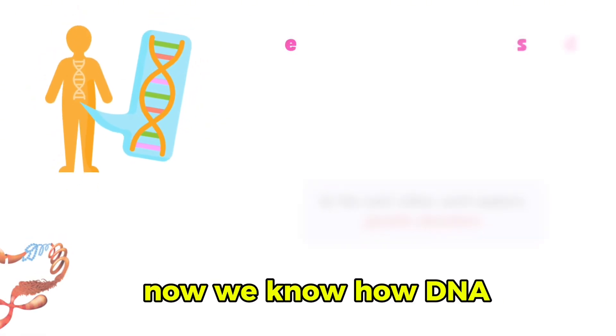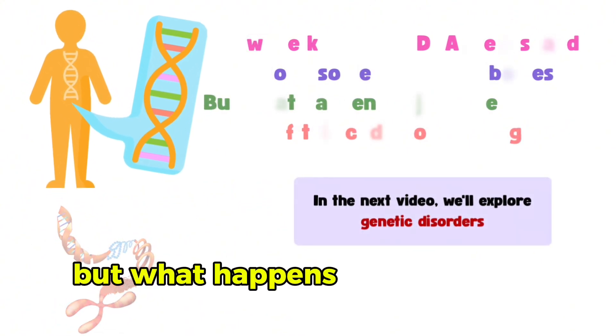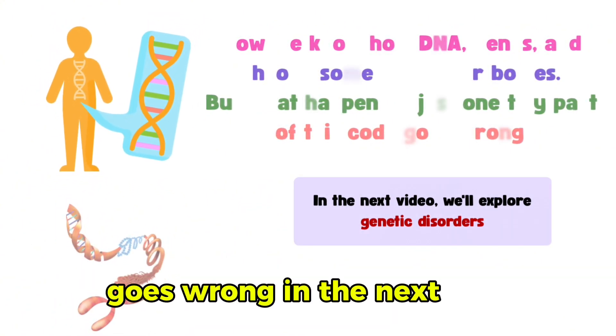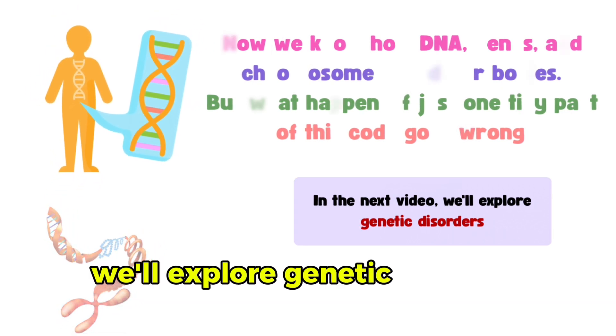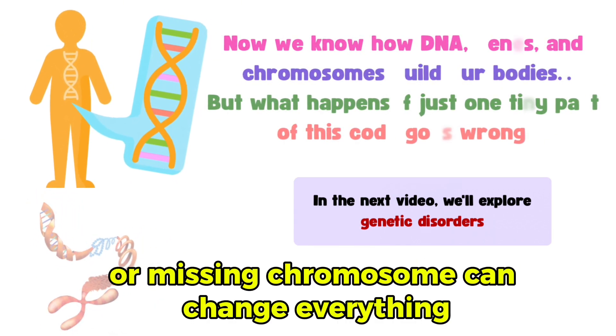Now we know how DNA, genes, and chromosomes build our bodies. But what happens if just one tiny part of this code goes wrong? In the next video, we'll explore genetic disorders and how one extra or missing chromosome can change everything.